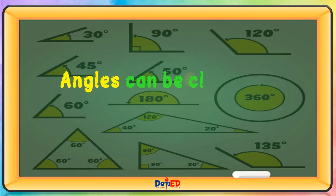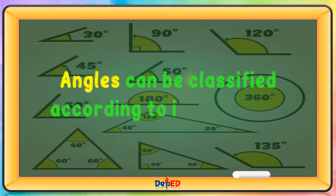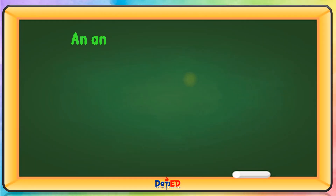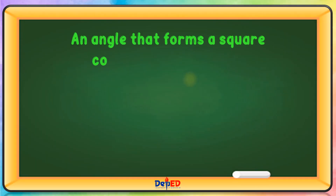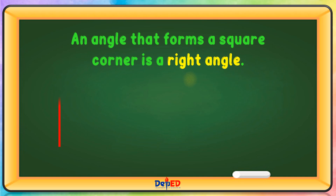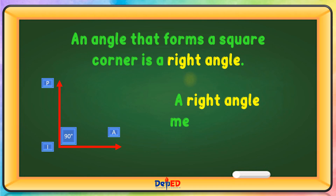Angles can be classified according to their measure. An angle that forms a square corner is a right angle. A right angle measures 90 degrees.